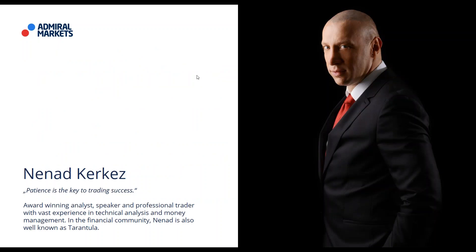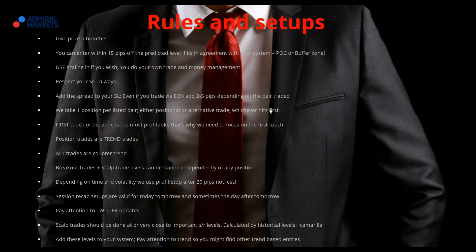Today's agenda will be to show you previous week results and to go with this week's setup. Rules for our session recap trades: give price a breather — you can enter within 50 pips of the predicted level if it's in agreement with your system. Always respect your stop loss. We use POC or buffer zone. Add a spread to your stop loss, even if you trade via ECN, and add 2 to 5 pips depending on the pair traded.